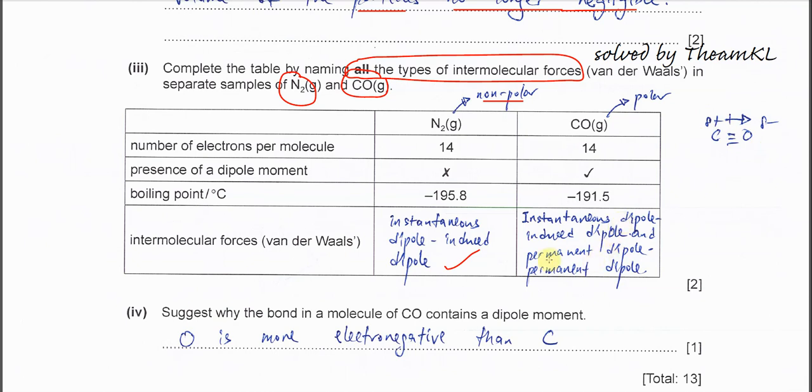It can have IDID because C and O have electrons. As long as the molecule has electrons, it will have instantaneous dipole-induced dipole forces. Other than IDID, because it's a polar molecule, it can form permanent dipole-permanent dipole with another molecule.